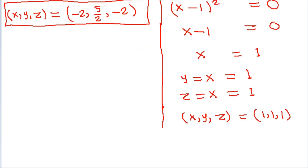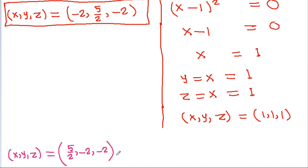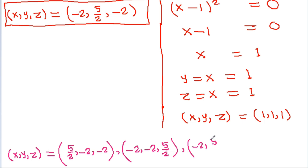So the four solutions for (x, y, z) are: (5/2, minus 2, minus 2), (minus 2, minus 2, 5/2), (minus 2, 5/2, minus 2), and (1, 1, 1).